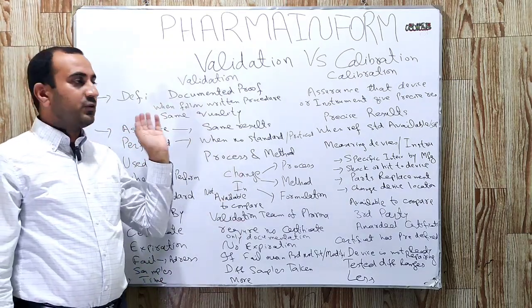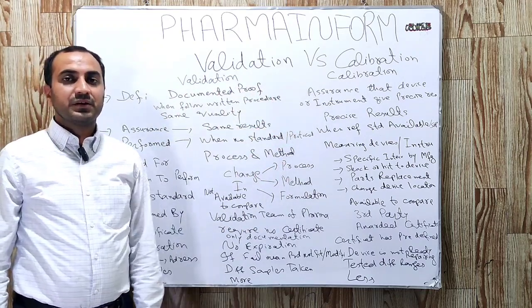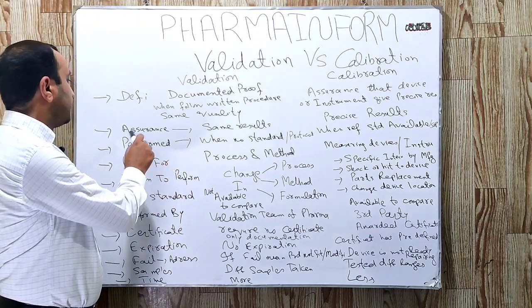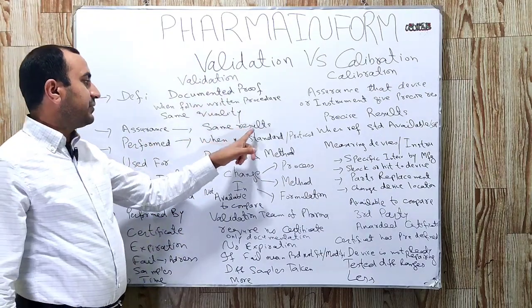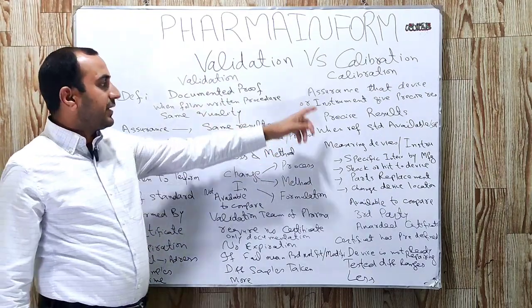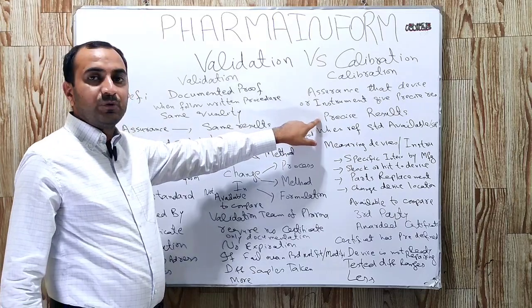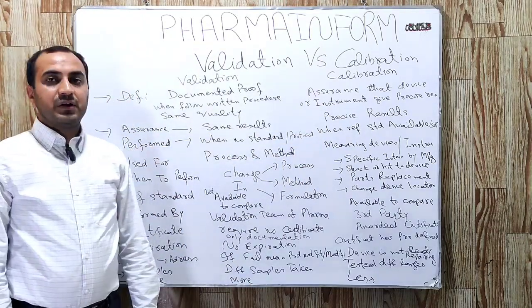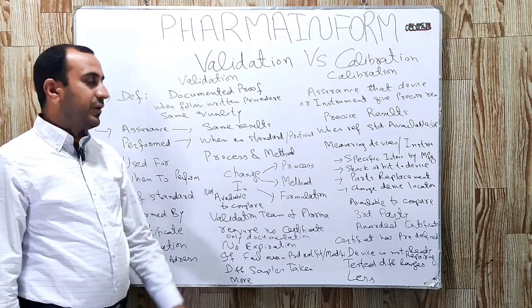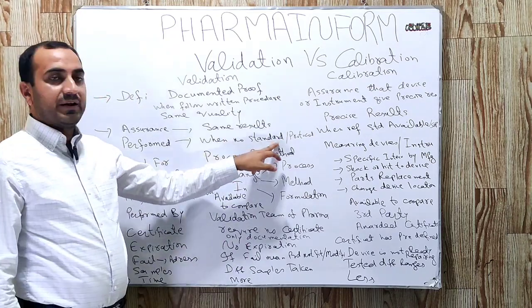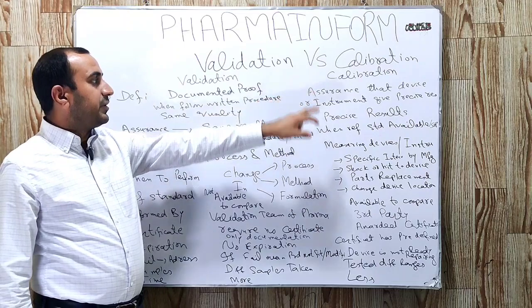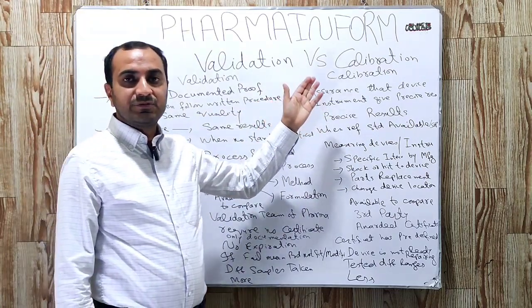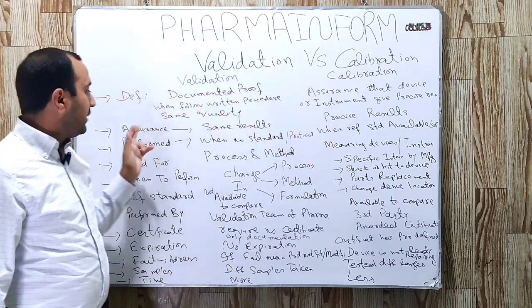Remember these key points: definition, assurance, when to perform, and used for. Validation gives assurance of same results; calibration gives assurance of precise results. Validation is performed when we have no reference standards; calibration is performed when we have reference standards available.